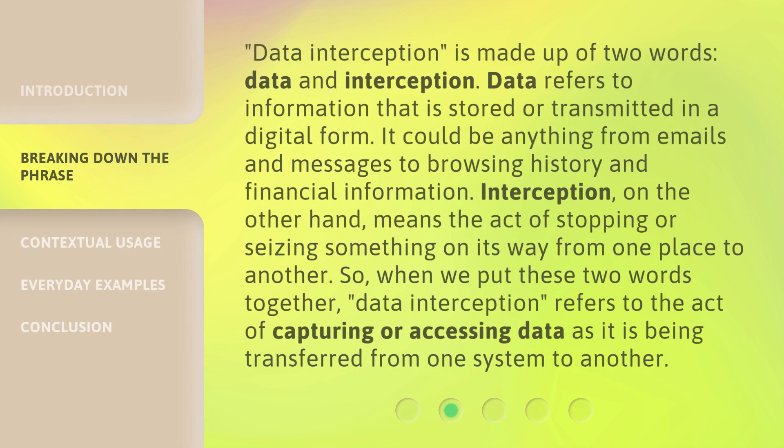Data interception is made up of two words: data and interception. Data refers to information that is stored or transmitted in a digital form — it could be anything from emails and messages to browsing history and financial information. Interception, on the other hand, means the act of stopping or seizing something on its way from one place to another. So when we put these two words together, data interception refers to the act of capturing or accessing data as it is being transferred from one system to another.